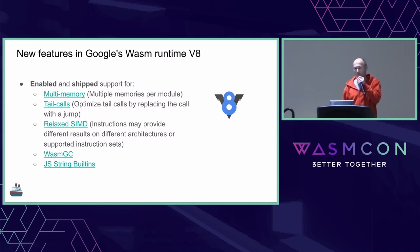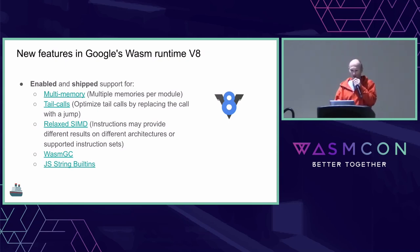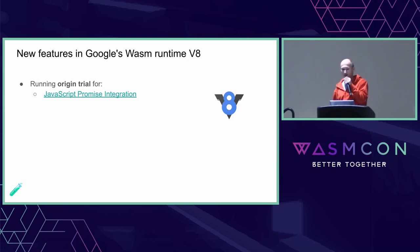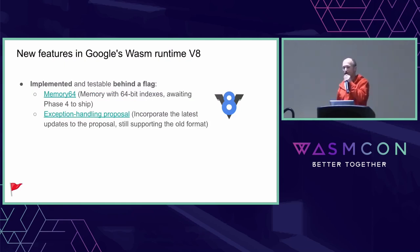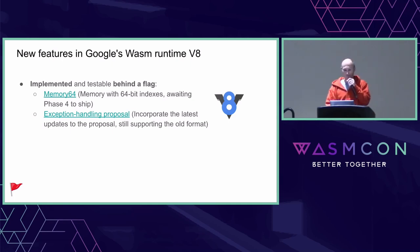New features in Google's V8 runtime: multi-memory support has been enabled and shipped; tail calls, relaxed SIMD, Wasm GC, and JS string built-ins are all shipping. JavaScript promise integration is in origin trial, so you can test it with real users. Behind flags, you can test memory64 and the updated exception handling proposal — the latest format as well as the old format.